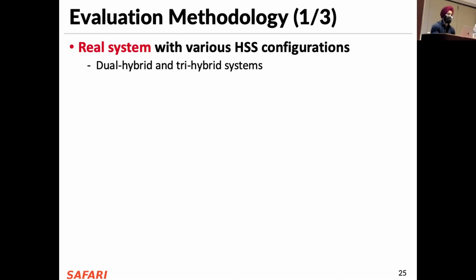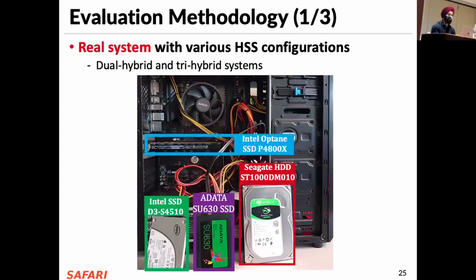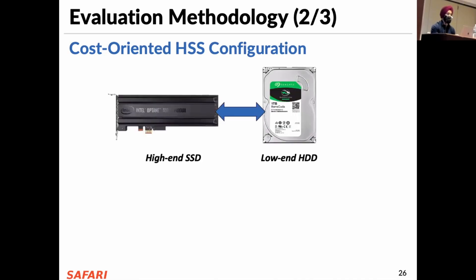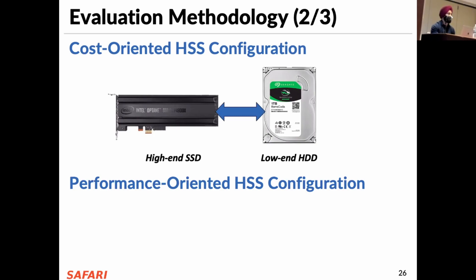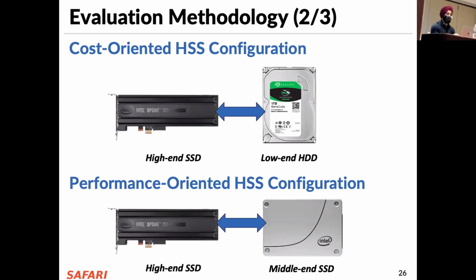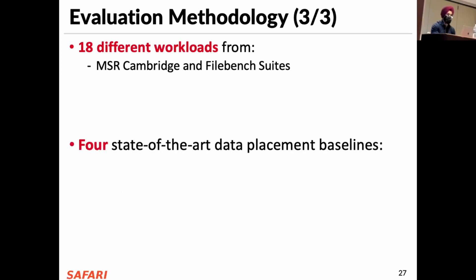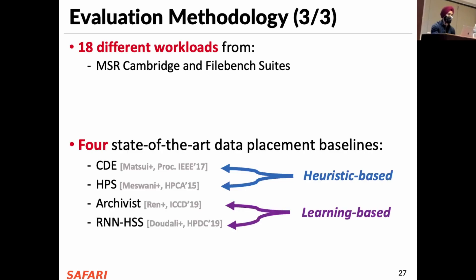We now present key results from real system evaluation for both dual hybrid and tri-hybrid systems. We implement Sybil in the storage management layer of an AMD Ryzen 7 CPU. For the dual configuration, we evaluate a cost-oriented hybrid storage configuration using a high-end SSD connected to a low-end hard disk drive with a large latency difference, and a performance-oriented configuration using a high-end SSD with a mid-end SSD with similar latencies. We use 18 different workloads from MSR Cambridge and File Benchmark and compare Sybil against four state-of-the-art policies — two heuristic-based and two supervised learning-based.